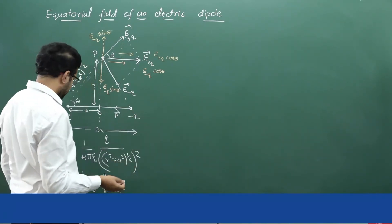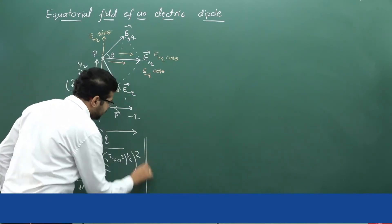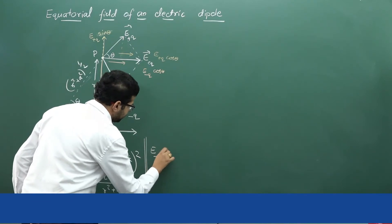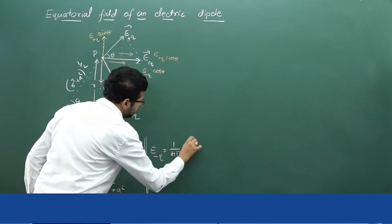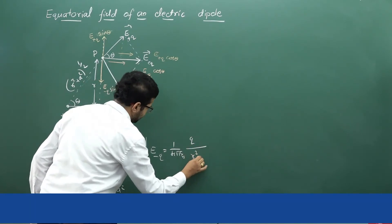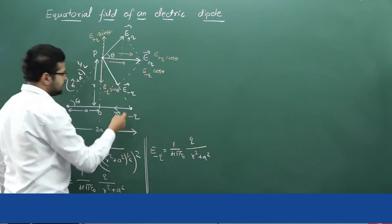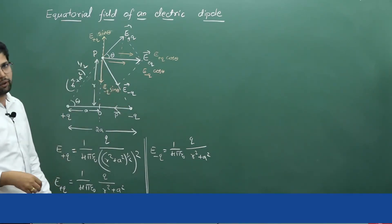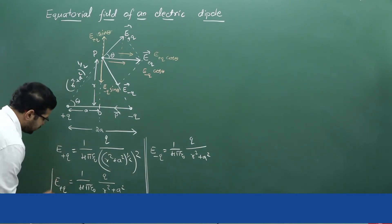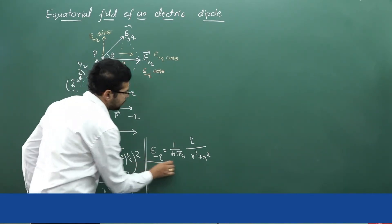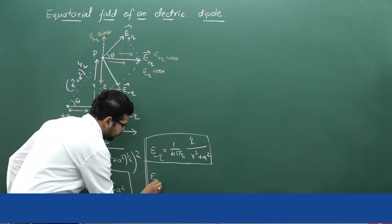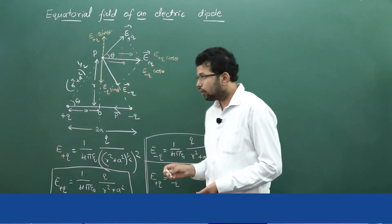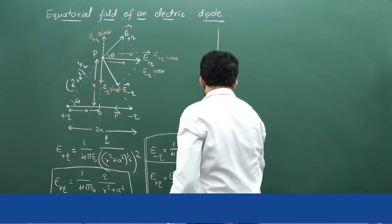Similarly, E of minus q is equal to 1 over 4 pi epsilon naught into q divided by (r squared plus a squared), because the distance between minus q and point P is also equal to the square root of r squared plus a squared. From these two equations we can conclude that the magnitude of E of plus q is equal to the magnitude of E of minus q.